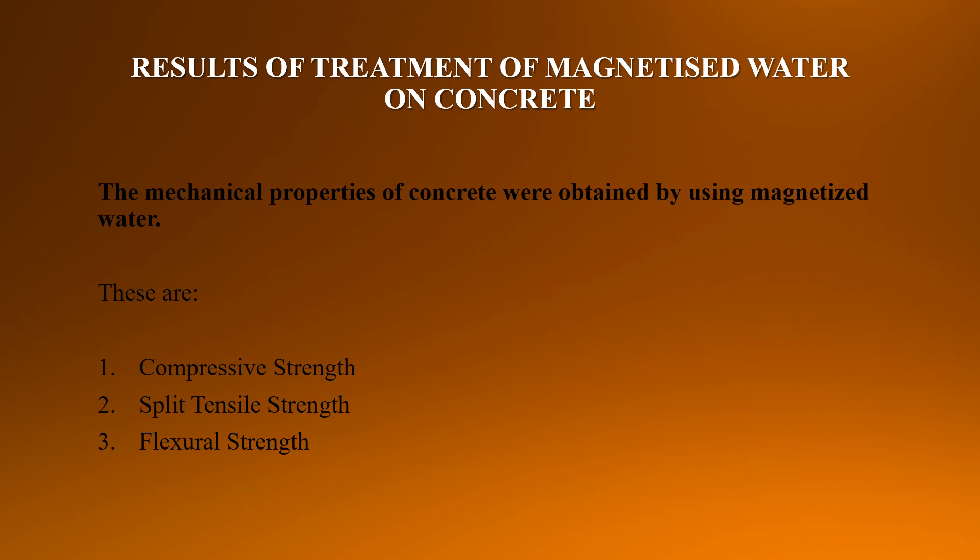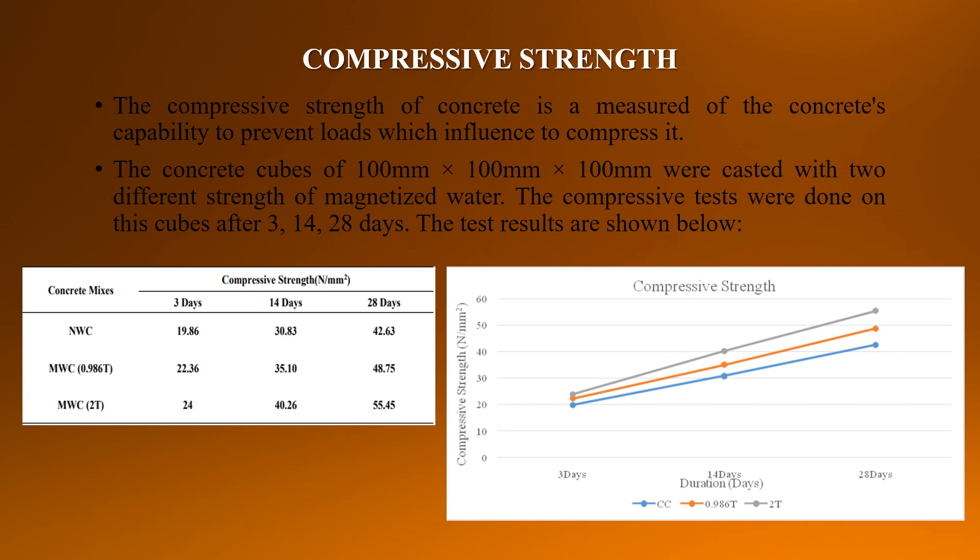Result of treatment of magnetized water on concrete. The mechanical properties of concrete were obtained by using magnetized water, including compressive strength, split tensile strength, and flexural strength. Compressive strength measures the concrete's capability to resist compressive loads. Concrete cubes of dimension 100 mm × 100 mm × 100 mm were cast with two different strengths of magnetized water, and compressive tests were done on these cubes from 3 to 28 days. The test results are shown below.